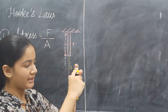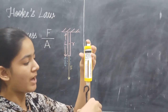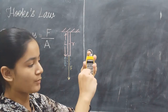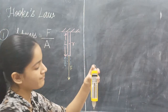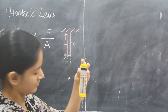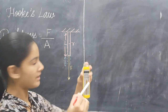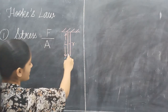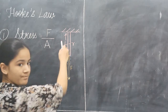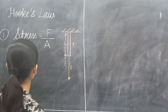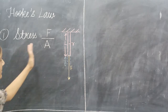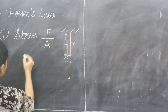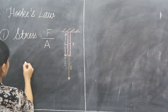When the mass was not applied, this was the original length, which is capital L. Now we are applying the mass to it, and the elongation is small l. This is the elongation and this is the original length capital L. So we can say that stress is equal to force per unit area.